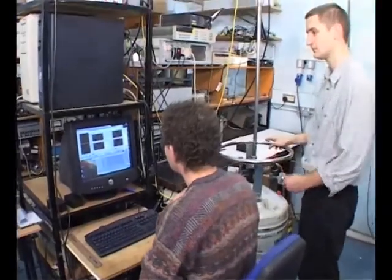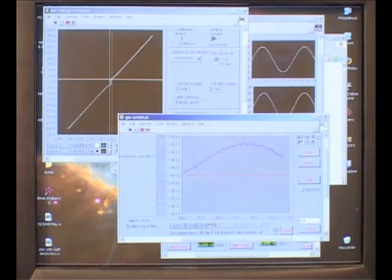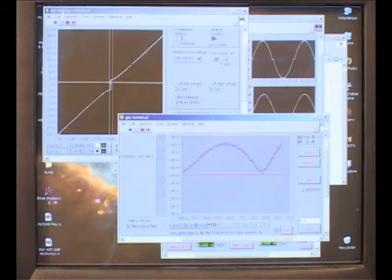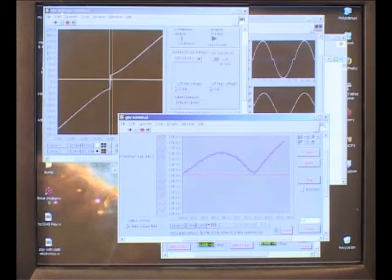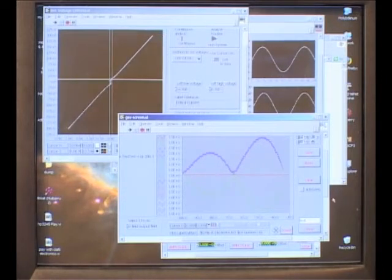So we're seeing the current. We're starting at a large negative field and we've seen the current coming up, being suppressed, coming up again. That's getting pretty much to zero, isn't it? And we see another maximum and another minimum.